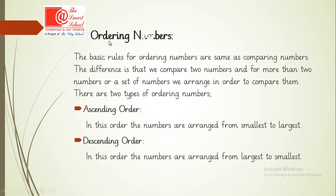Now, ordering numbers. Ordering numbers is actually the same as comparing numbers, but the difference is that in comparison we take two numbers, while in ordering we can take more than two. The basic rules for ordering are the same as comparing. There are two types of ordering: ascending order and descending order. In ascending order we start writing numbers from the lowest, and in descending order we start writing from the greatest.